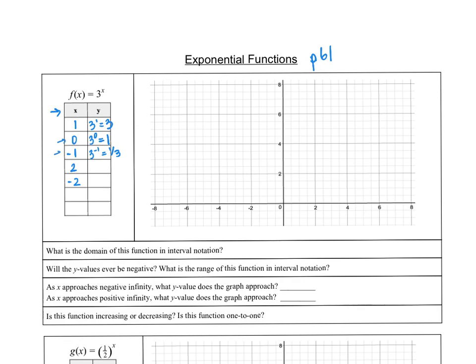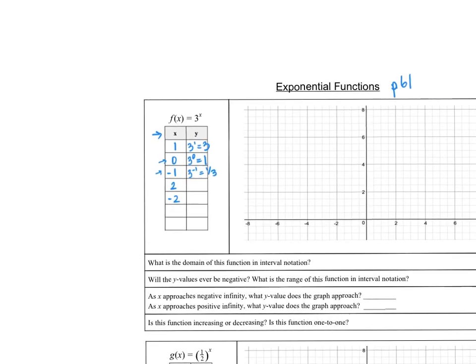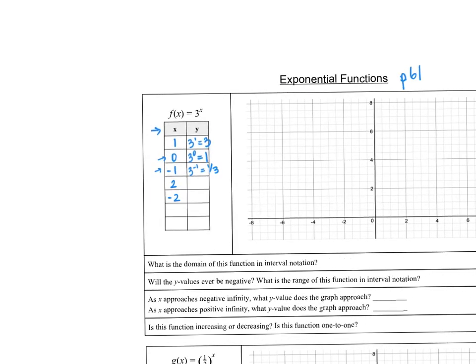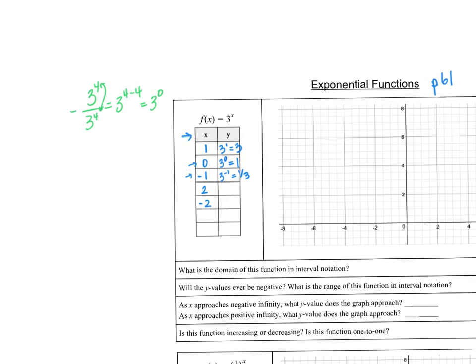If you're not sure about zero and negative exponents, let's take a look. We can use exponent rules. If you have something like 3 to the 4th over 3 to the 4th, the exponent rule says subtract the exponents, giving 3 to the 4 minus 4, which equals 3 to the 0. But we also know that 3 to the 4th over 3 to the 4th equals 1.